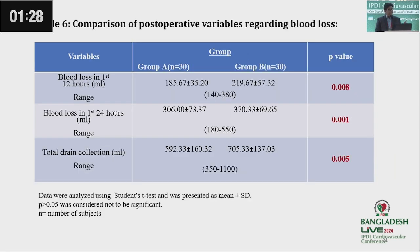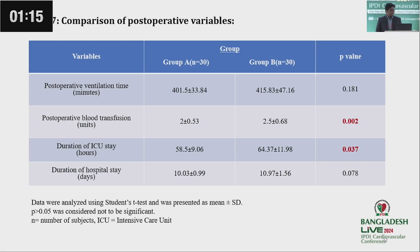Now comes the main part. Blood loss in the first 12 hours, first 24 hours, and total drain collection were all significantly greater in Group B. Postoperative blood transfusion was also increased in Group B, and the duration of ICU stay was longer.